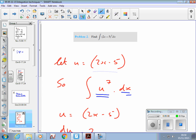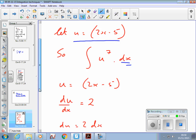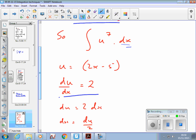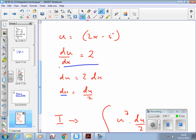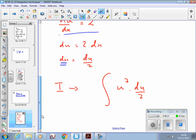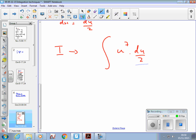So what I do to get my du is I take whatever I've called u and I differentiate it, and then rearrange so that I get dx equals something, du over 2, and then I can replace dx with du over 2. So now I can do the integral. And that's the idea. So just to complete it now.